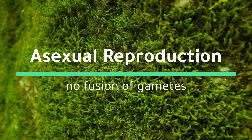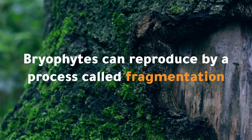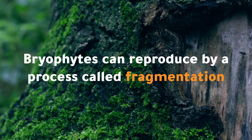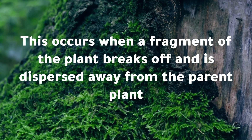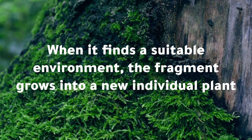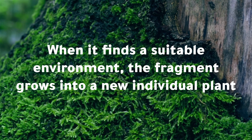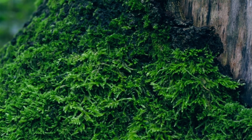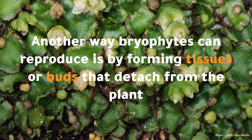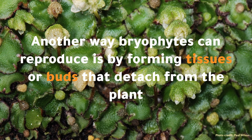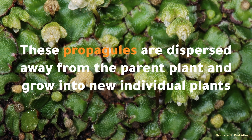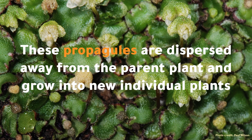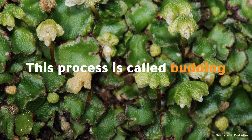Bryophytes can also reproduce asexually. Bryophytes can reproduce by a process called fragmentation — this occurs when a fragment of the plant breaks off and is dispersed away from the parent plant. When it finds a suitable environment, the fragment grows into a new individual plant. Another way bryophytes can reproduce is by forming tissues or buds that detach from the plant. These propagules are dispersed away from the parent plant and grow into new individual plants. This process is called budding.